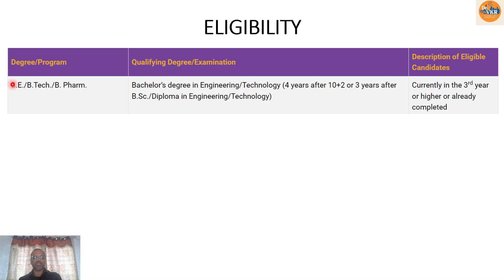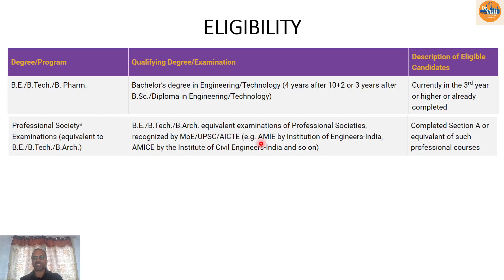Regarding eligibility — who can apply for GATE? In general, it is for bachelor program holders: BE, B.Tech, B.Arch — bachelor degree in engineering/technology. There are two categories: those coming from intermediate (four-year B.Tech) and those from diploma (three-year B.Tech). Eligibility is also given to present third-year or pre-final year students, as the GATE score validity is two years. So whether you are in third year, final year, or have completed graduation, you can apply. Additionally, those obtaining degrees from professional societies like AMIE or IE, having completed Section A or equivalent of such professional courses, are also eligible.